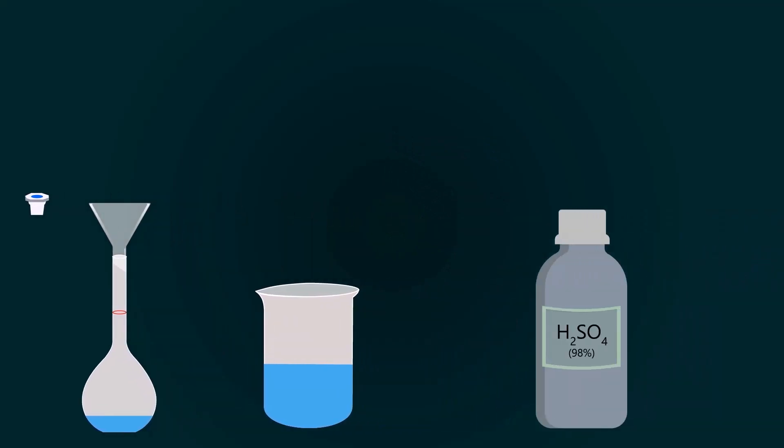Now take the bottle of 98% H2SO4. Open the lid and pipette out the required volume, which is 153 ml.